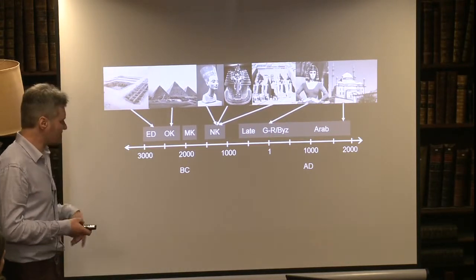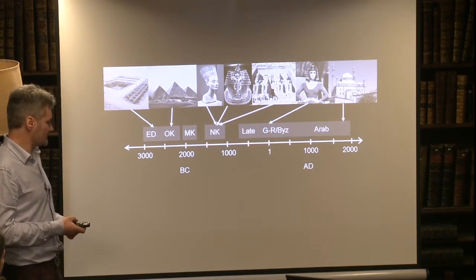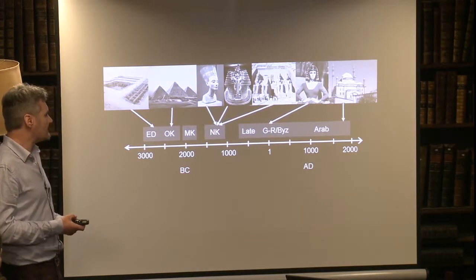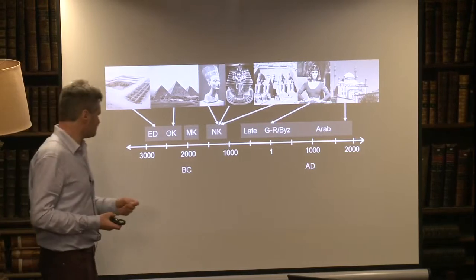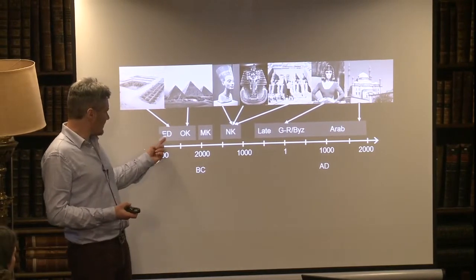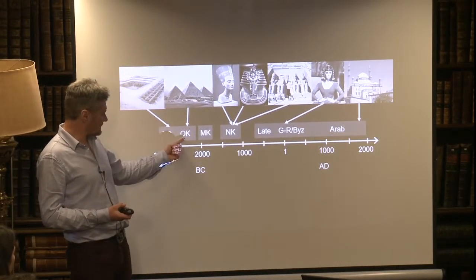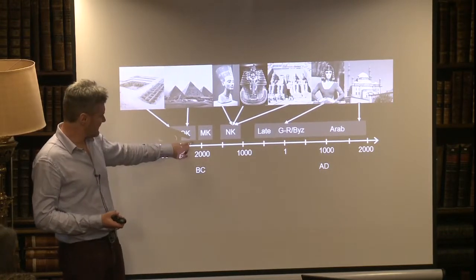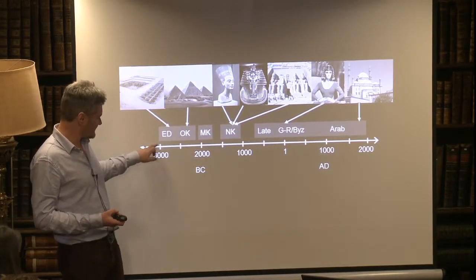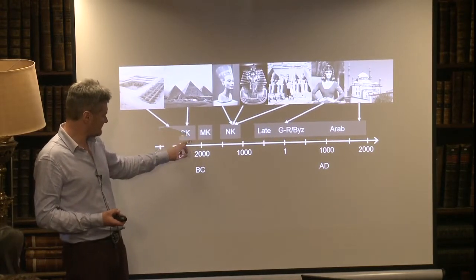Here we have the chronology of Egypt all the way through immensely long periods of time. This is what we call the early dynastic period and the old kingdom, and this really can be considered one continuous state.